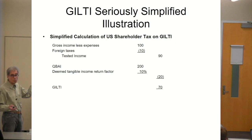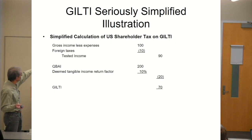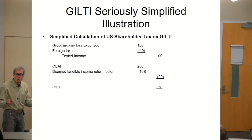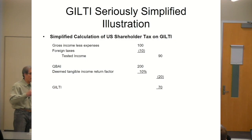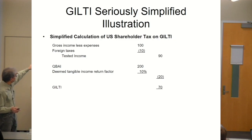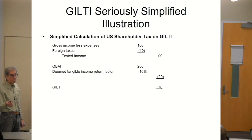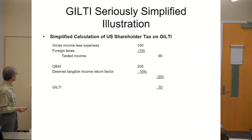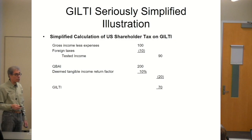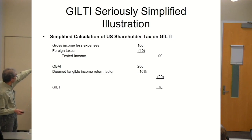We take our gross income less expenses of 100, subtract off the 10 foreign taxes, and we have something called tested income. Tested income is a term used in the code section, and it is essentially the equivalent of earnings and profits — the ability to pay a dividend — but it's not actually earnings and profits. There are no adjustments for capital losses or other items; this is based on taxable income and taxable expense under U.S. rules. We then subtract off 10% of the QBAI, and we come down with GILTI of 70.